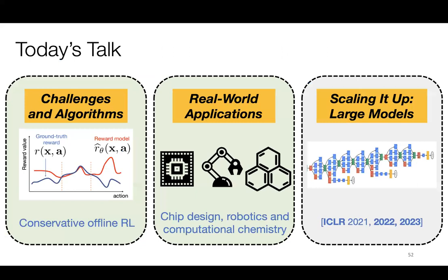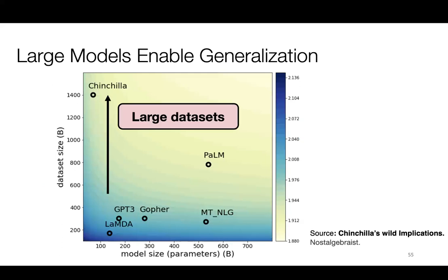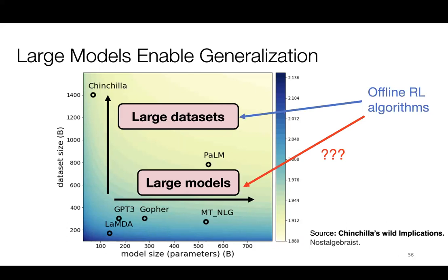Part three: scaling these methods to enjoy the benefits of large models. I started the talk with a plot showing how large datasets with language models give great performance, but the second important aspect is large model size — if you have data of a given size, scaling up model capacity gives emergent beneficial properties. With offline RL methods, I've discussed how to leverage large datasets, but the natural next question is: what can you do to make offline RL methods enjoy the benefits of large model architectures? This is a two-dimensional problem of data scale and model scale.